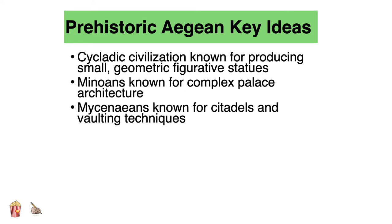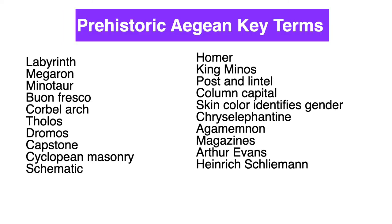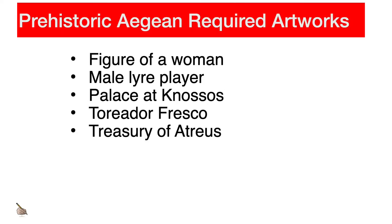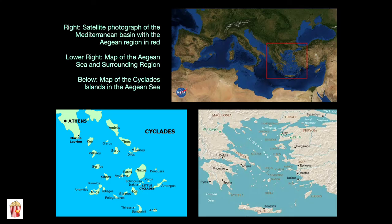Prehistoric Aegean key ideas: The Cycladic civilization is known for producing small geometric figurative statues. The Minoans are known for complex palace architecture. And the Mycenaeans are known for citadels and vaulting techniques. Here's a list of key terms you will learn throughout the lecture, five artworks we will study, and maps showing sites including Knossos, Mycenae, and the Cyclades.